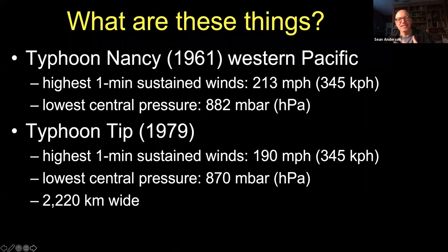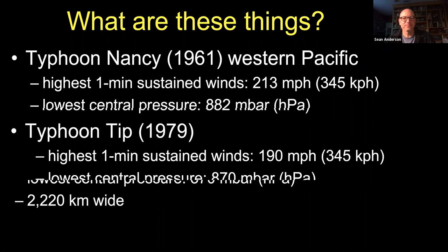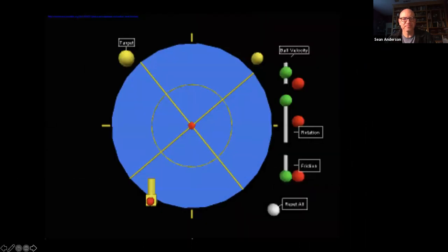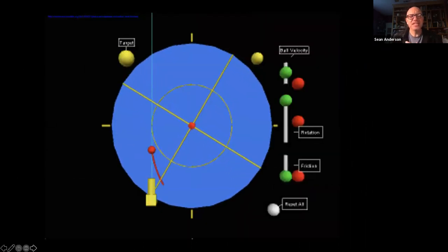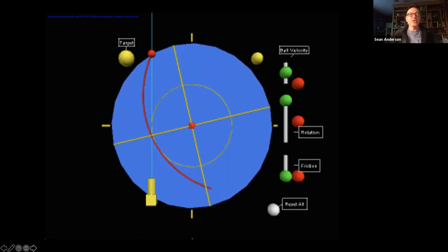Typhoon Tip was more than 2,000 kilometers wide — massive in scale. So Nancy is the windiest and Tip is the biggest we've seen. People always ask what the strongest hurricane is when we start on this topic; we could also look at the deadliest or costliest, but for the introduction to hurricanes, these are the two to start with.